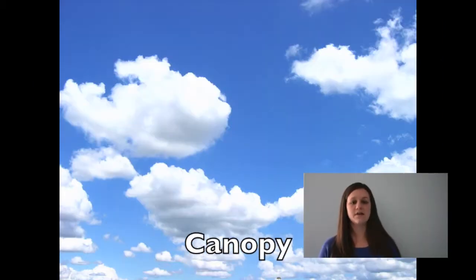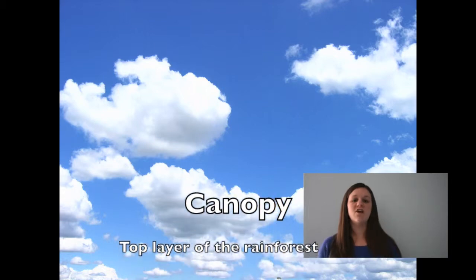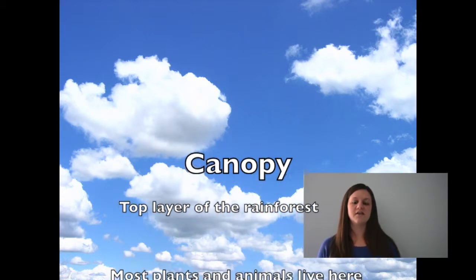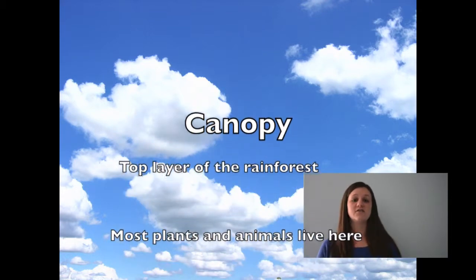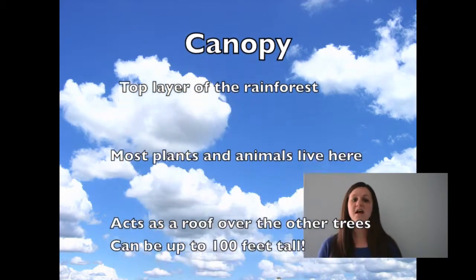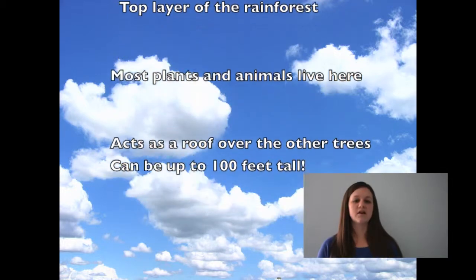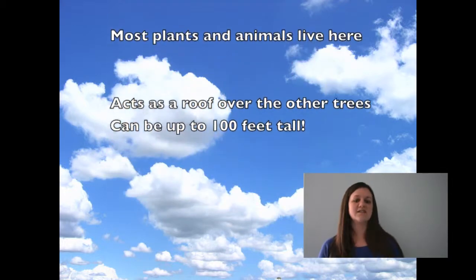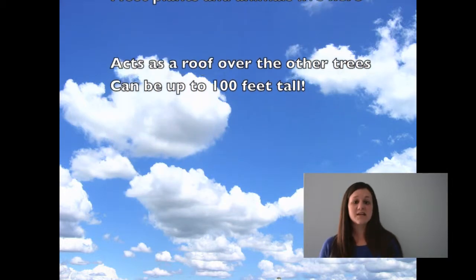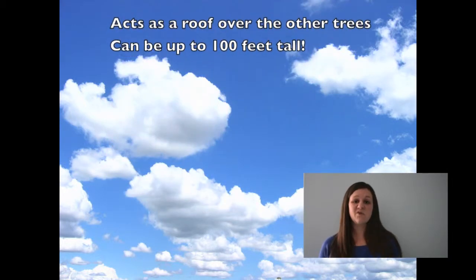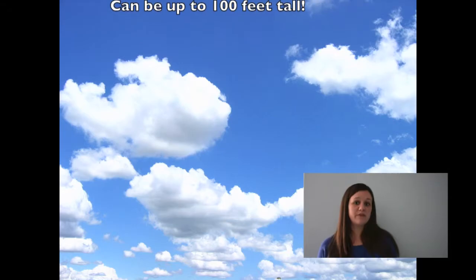At the top level, which is the canopy, is where all the sun is. There's a lot of plants that live there and there's a lot of animals that live there. They like the sun and that's where they can eat food from the different plants that grow there.